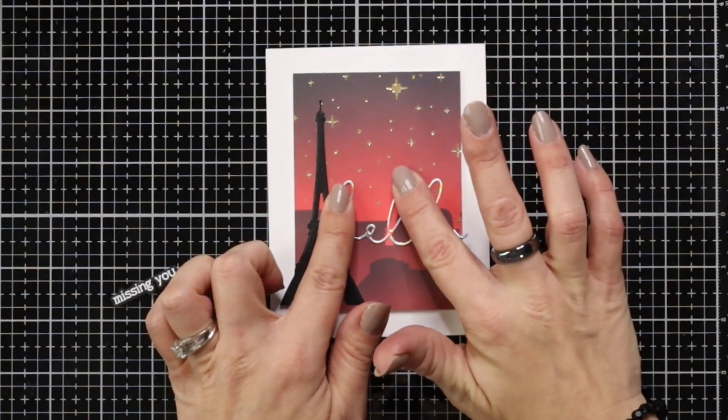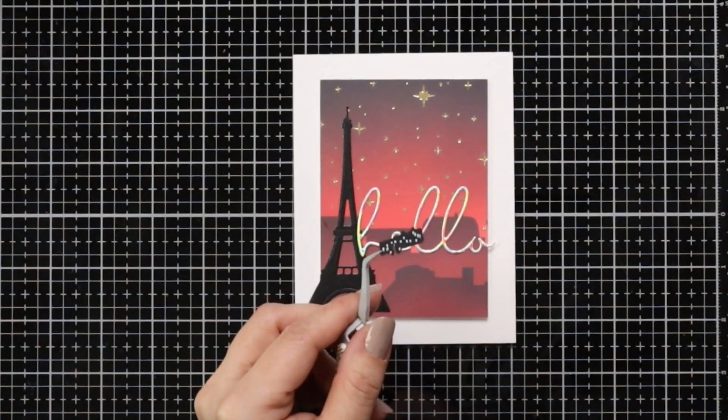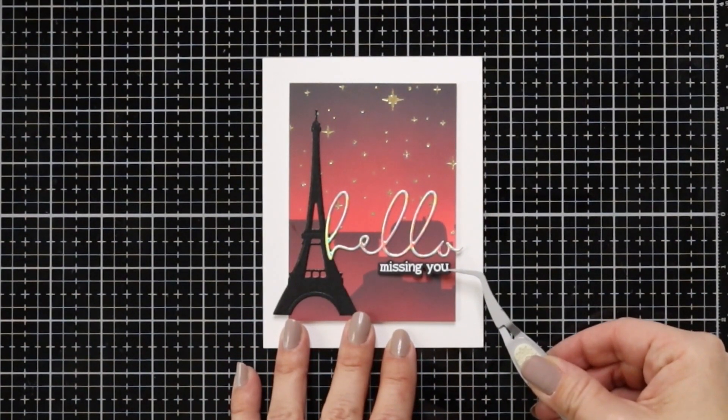I also have my missing you. Now I did think about adding foam squares to this but I was really just kind of liking it being flat at this point. I had enough dimension with the cardstock behind my ink blended panel.